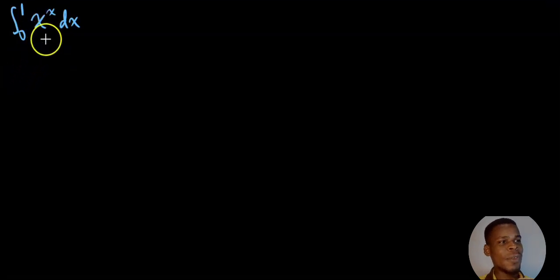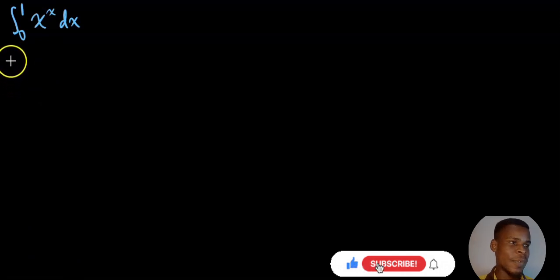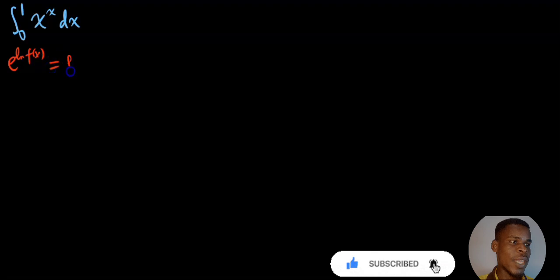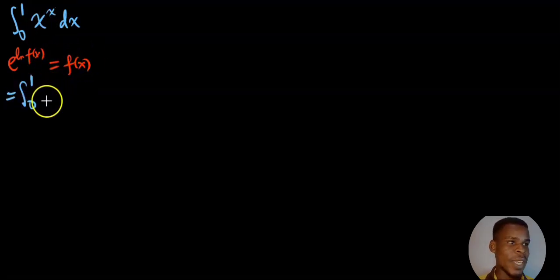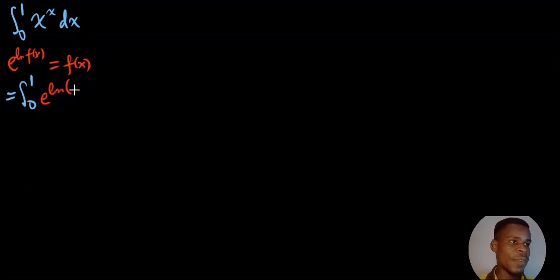First of all, I'm going to use the property that the natural logarithm function and natural exponential function are inverses of each other. That means that their composition will produce the identity — whatever function we have will just produce that function. So using that rule, we can write the integral from 0 to 1 of this function, looking at it as f(x), as e raised to the power of the natural logarithm of x raised to the power of x. Then we close that and put the dx.